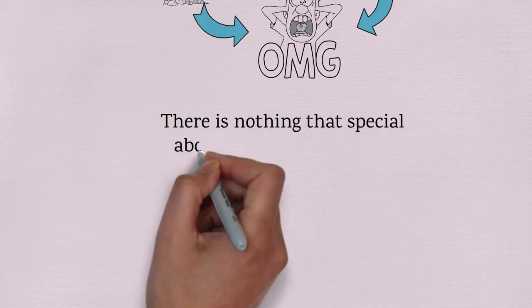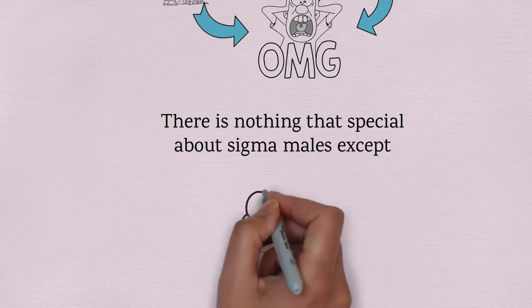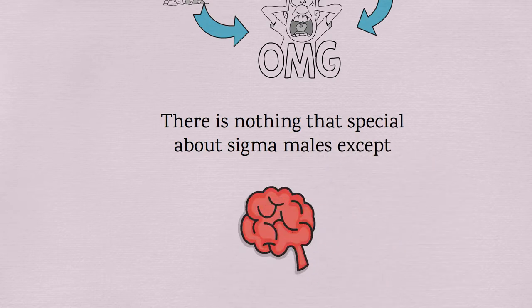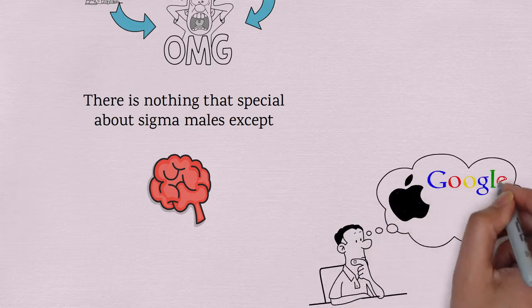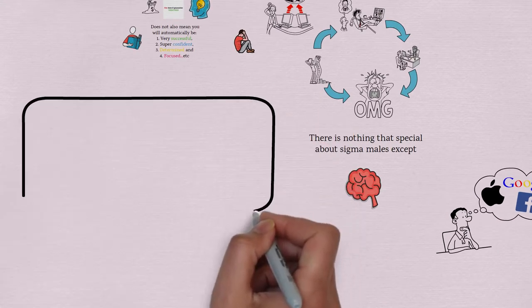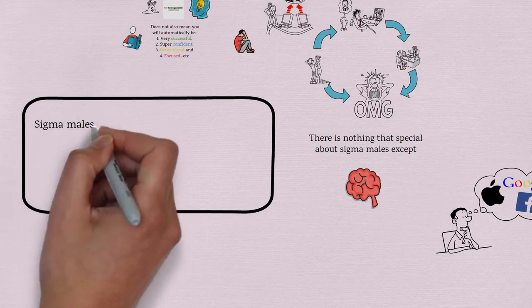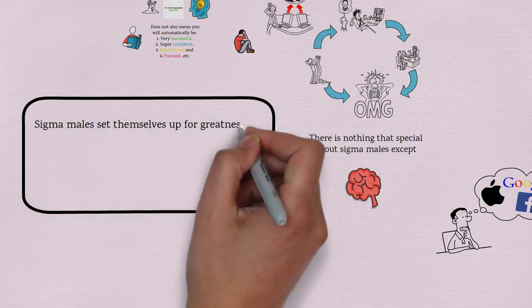There is nothing special about Sigma males, except for the fact that they are born intelligent, and because of this, they are usually two steps ahead of everyone. They can figure out things faster and arrive at solutions quicker than most people. Sigma males set themselves up for greatness by...